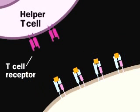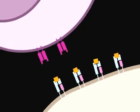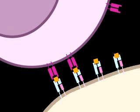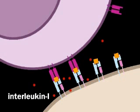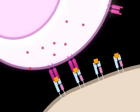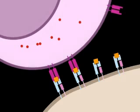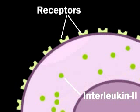A helper T cell can bind the displayed antigen if the T cell has surface T cell receptors that correspond to a specific antigenic determinant on the displayed antigen. Once the helper T cell has docked, the antigen-presenting cell releases interleukin-1, a cytokine that activates the helper T cell. The activated T cell now produces a different cytokine, interleukin-2, as well as cell surface receptors for IL-2.